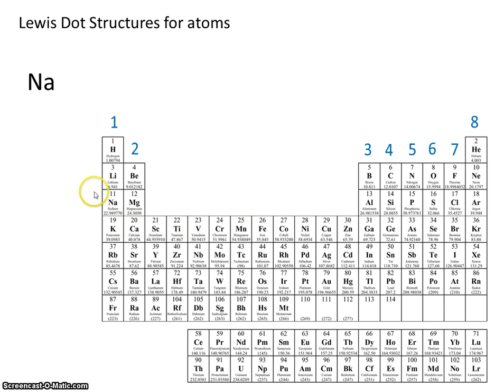Sodium is located here. It has one valence electron, so we'd make one dot. Calcium is located here in group two. It has two valence electrons.